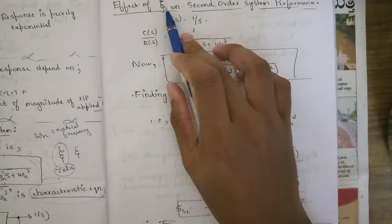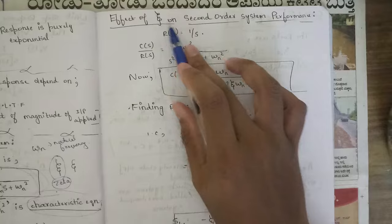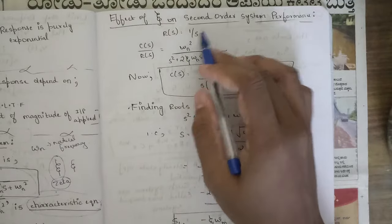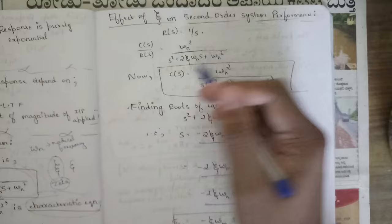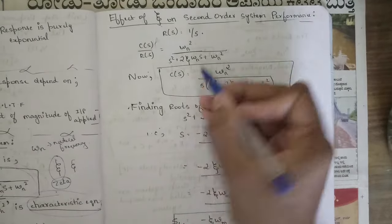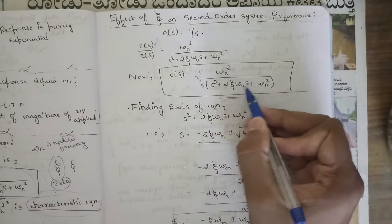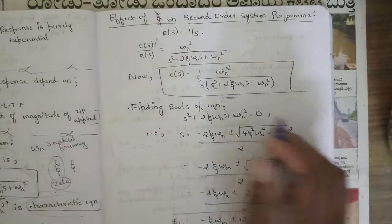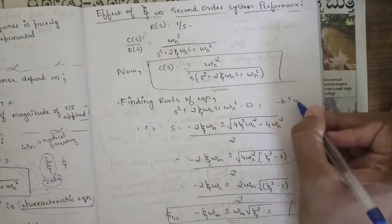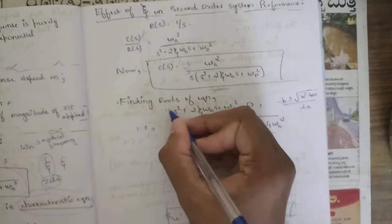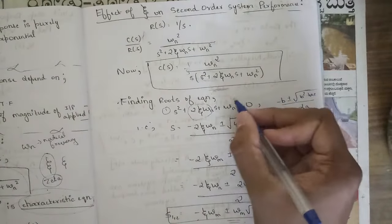Now let's discuss the effect of zeta on second order system performance. Consider R(s) = 1/s. Then C(s) = ωn² / [s(s² + 2ζωns + ωn²)]. We find the roots of the characteristic equation using the quadratic formula: s = (−b ± √(b² − 4ac)) / 2a, where a = 1, b = 2ζωn, and c = ωn².